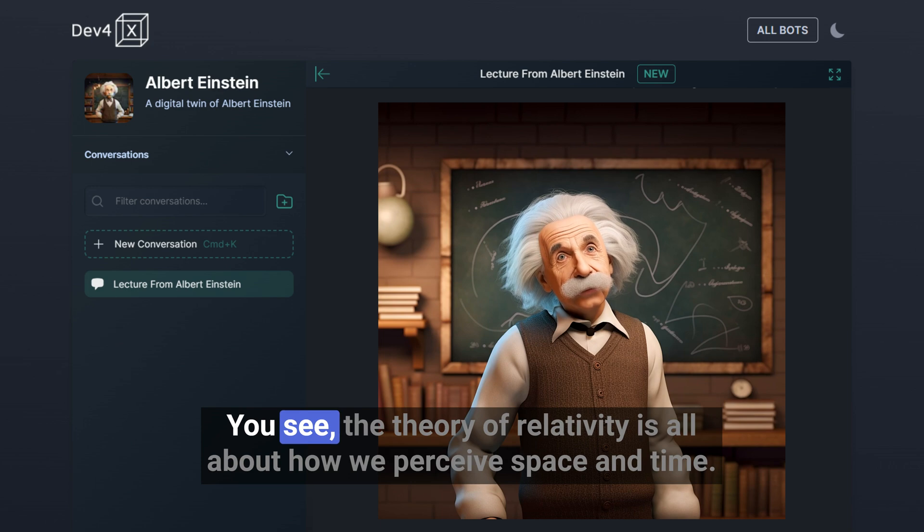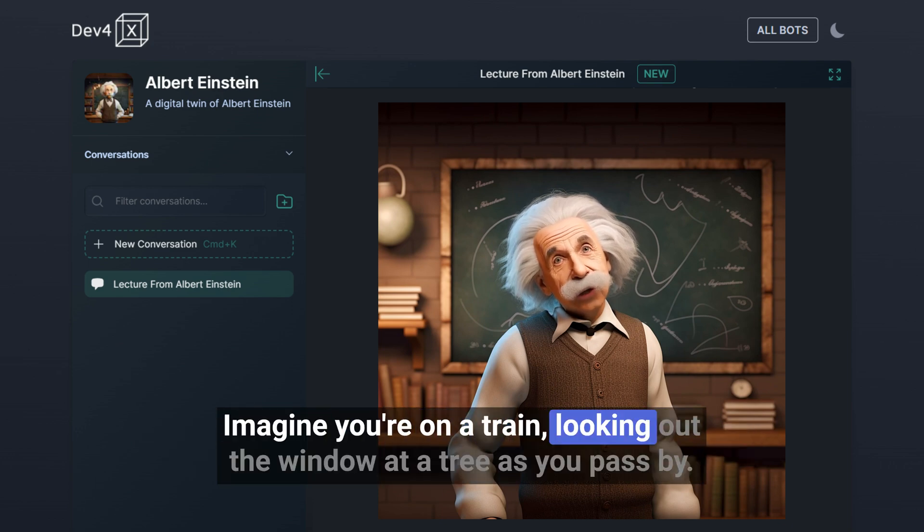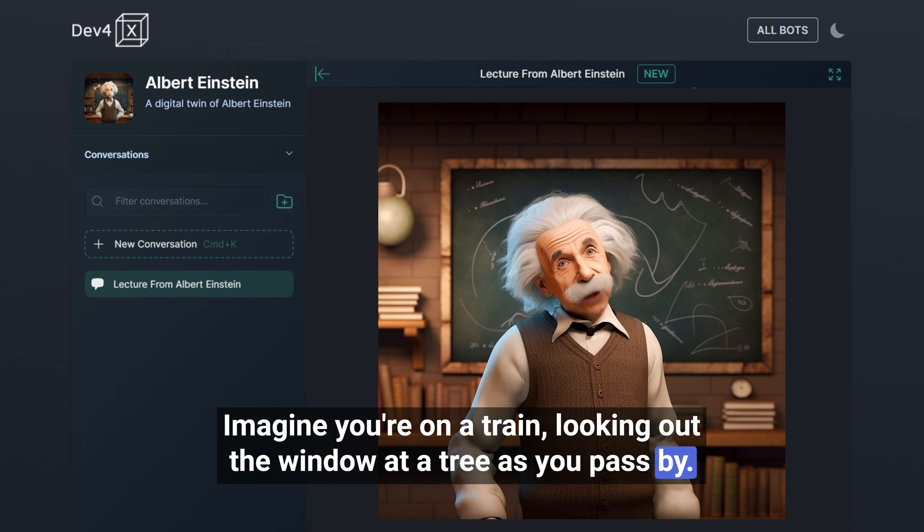You see, the Theory of Relativity is all about how we perceive space and time. Let's start with a simple thought experiment. Imagine you're on a train, looking out the window at a tree as you pass by.